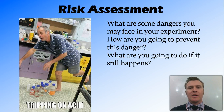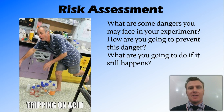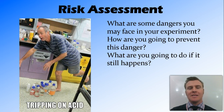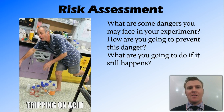It's very important when conducting a scientific experiment that you do a risk assessment. What you need to do is look at your experiment and see if there is anything dangerous that is going to happen, or could happen in your experiment. Then you need to work out how you're going to prevent this danger from occurring, and what you're going to do in case this danger still happens. If there aren't any dangers in your experiment, you need to specifically say that there are no risks associated with this experiment.